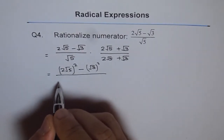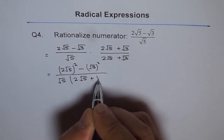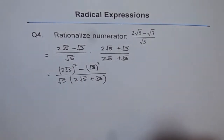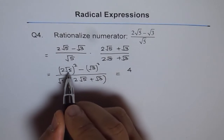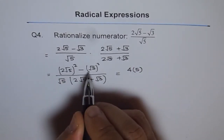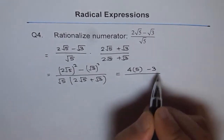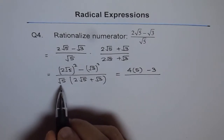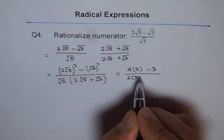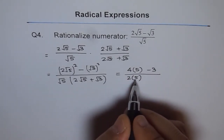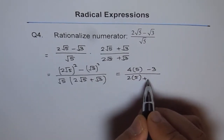In the denominator, we get square root 5 times (2 square root 5 plus square root 3). Now 2 squared is 4, and square root 5 squared is 5, giving 4 times 5. Square root 3 squared is 3, so we get minus 3. Using the distributive property in the denominator: square root 5 times 2 square root 5 is 2 times 5, since square root 5 times square root 5 is 5. And square root 5 times square root 3 is square root of 15.